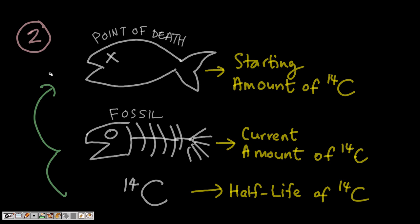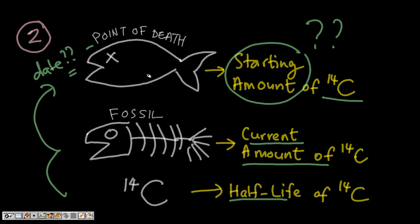We can try and backtrack to the point of death - meaning roughly when did the fish die, in this case. If all three variables are known: well, we know the half-life of carbon-14, we can also measure the current amount of carbon-14, but we do not know the starting amount of carbon-14 in the fish in the first place.